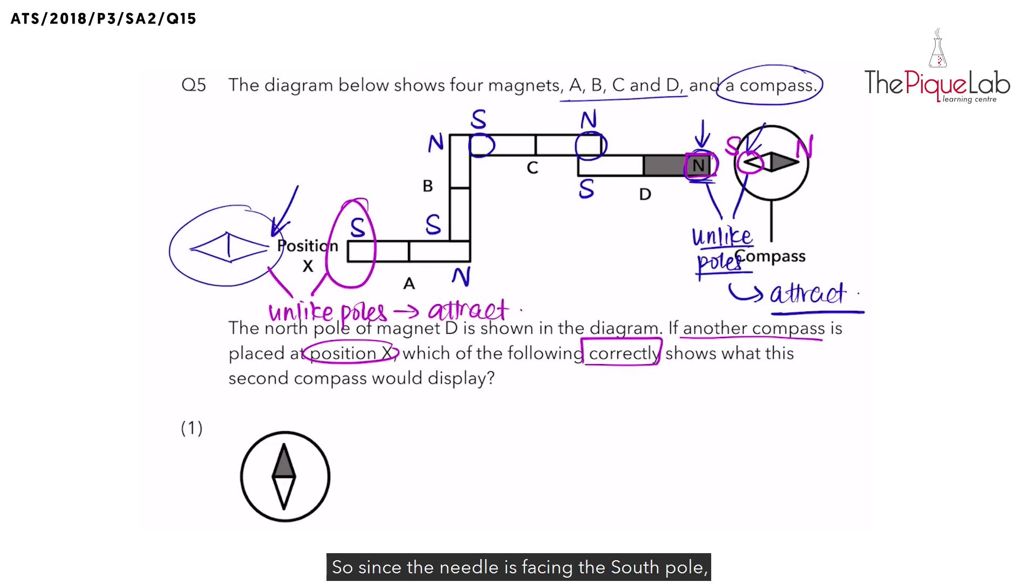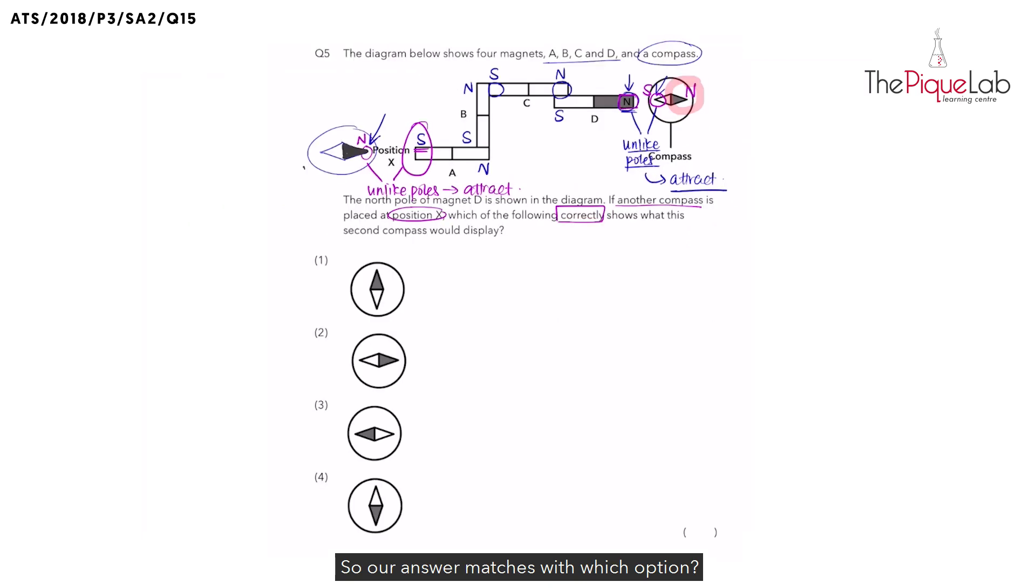So since the needle is facing the south pole, the needle must be north. And from our earlier compass, the north is actually the grey part. So what we can do is shade this grey here so that it's easier for us to match with the options. So our answer matches with which option? It matches with option number two.